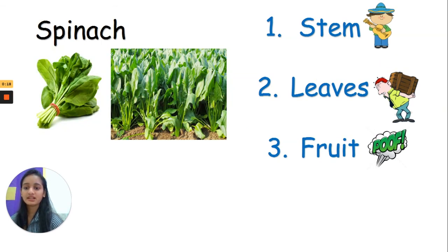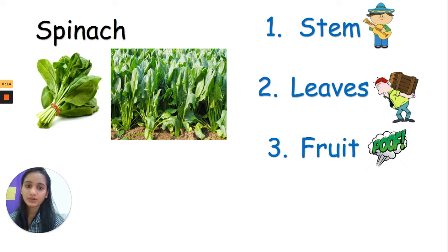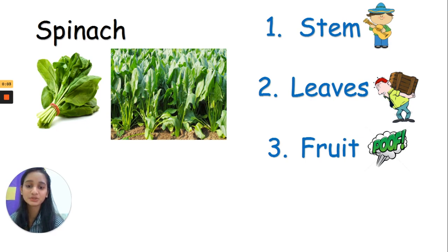The last one is spinach — this is an easy peasy one. One is stem, two is leaves, and three is fruit. What do you think it is? One, two, three. Were you carrying a heavy load on your back? If you were, that's absolutely correct everybody. Good job!